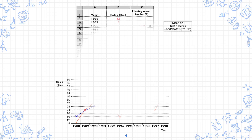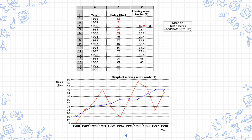This is another time series graph with data provided. Here we have sales and moving mean — with columns for year, sales, moving mean, and a sales plot.